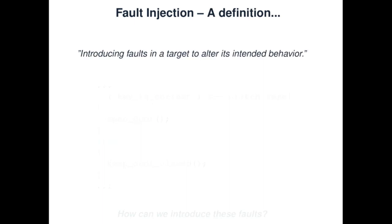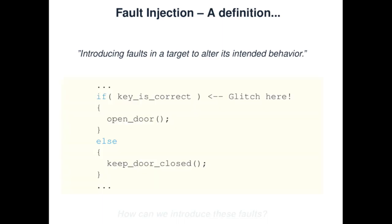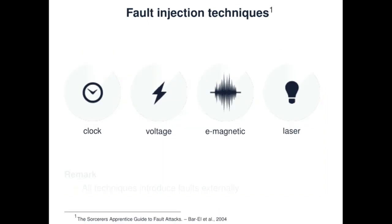When we talk about fault injection, we talk about introducing faults externally into a target to alter its intended behavior. For example, if we look at this little code snippet, we see that this code is used to open a door or not based on whether the key is correct. Using fault injection, we can change the intended behavior of this conditional if statement in order to open the door with the incorrect key. There are different types of fault injection techniques, all of which have been studied in the academic world extensively.